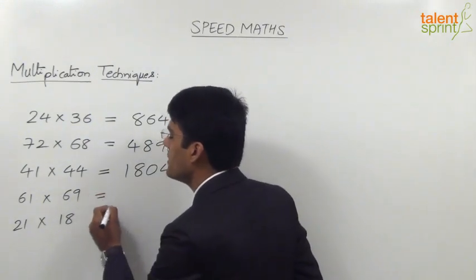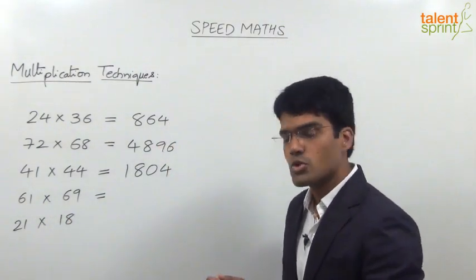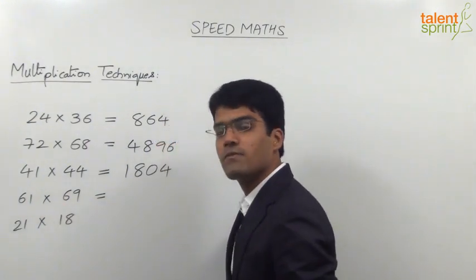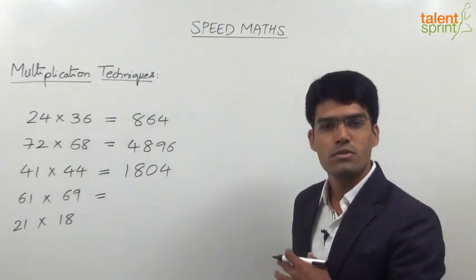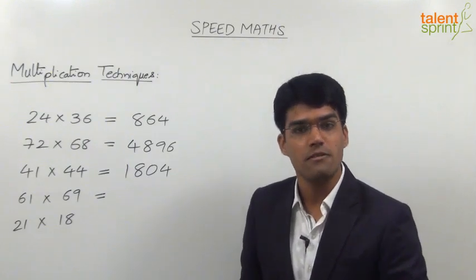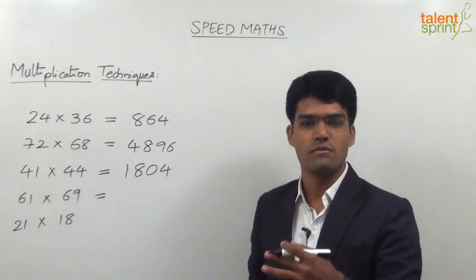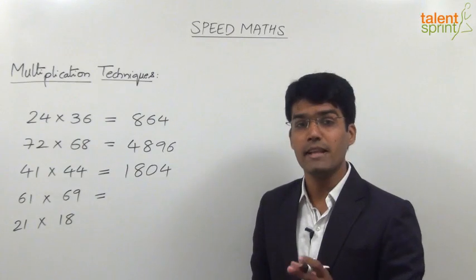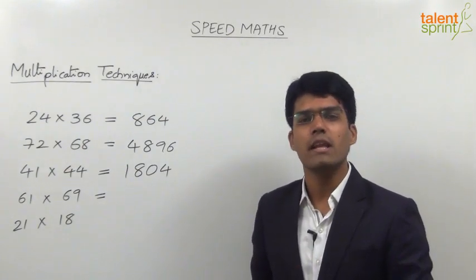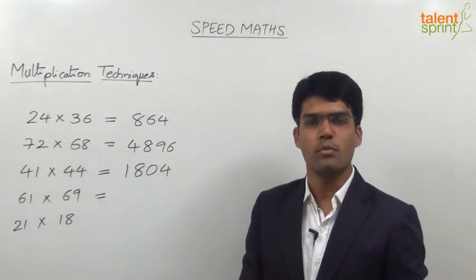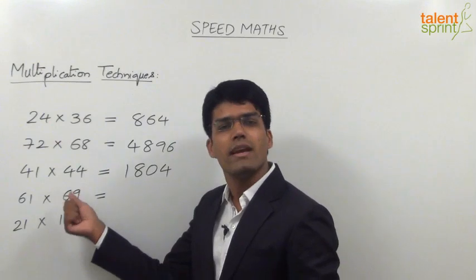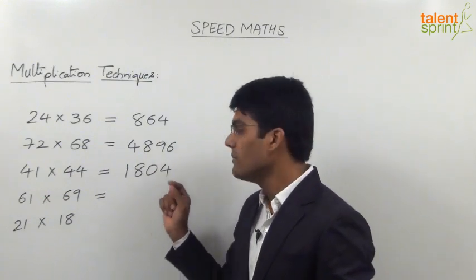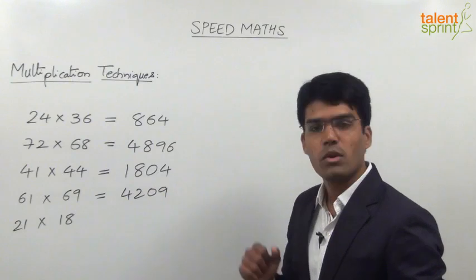The next question is 61 into 69. The difference is 8, which is even, so we can use (a + b)(a - b): that's (65 + 4)(65 - 4) = 65² - 4². Now, 65² = 4,225 — finding squares of numbers ending in 5 is very simple, and we shall discuss that later. So 4,225 - 16 = 4,209. That is the answer for question number four.